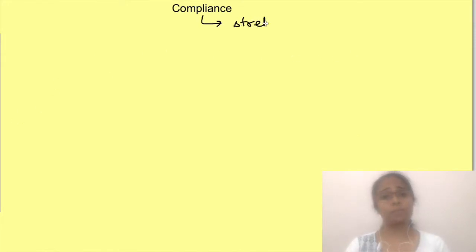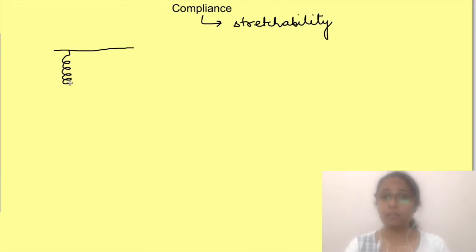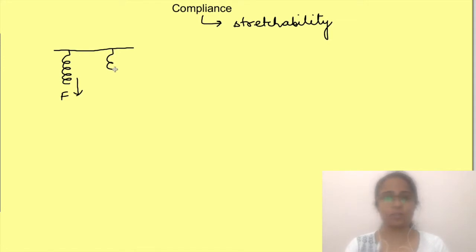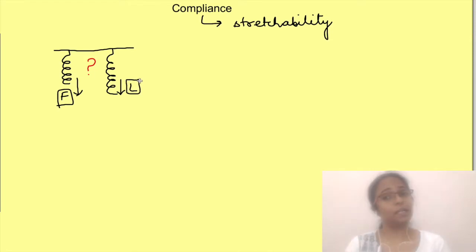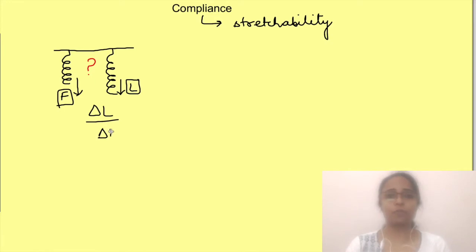Compliance in simple terms means stretchability. If an external force tries to pull or stretch any elastic substance, it stretches or expands. To determine how compliant that elastic substance is, we need to know how much force caused how much change in length, and then express it as change in length per unit applied force.